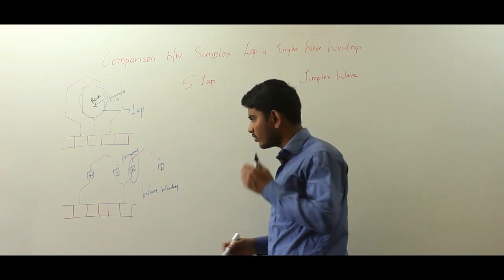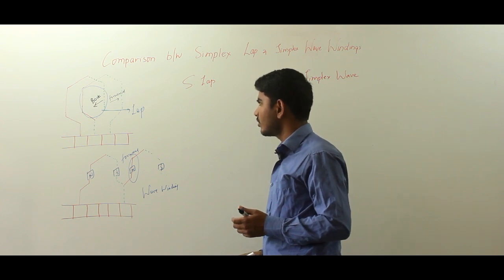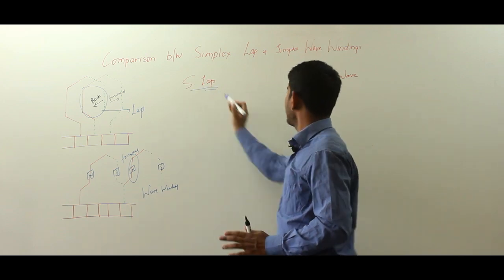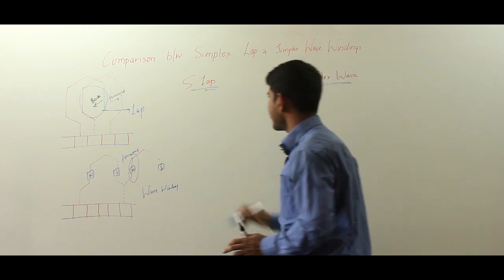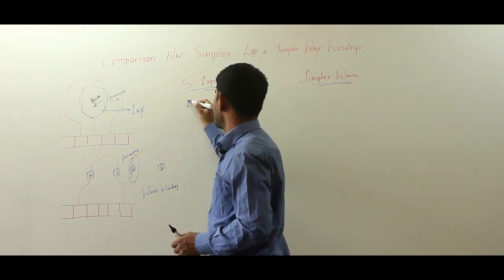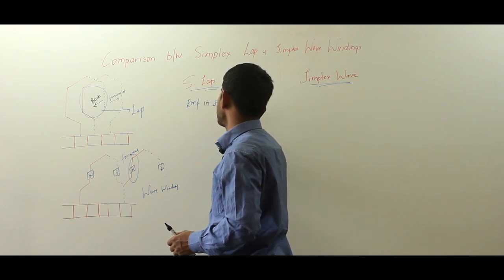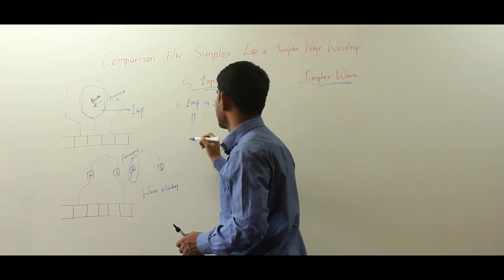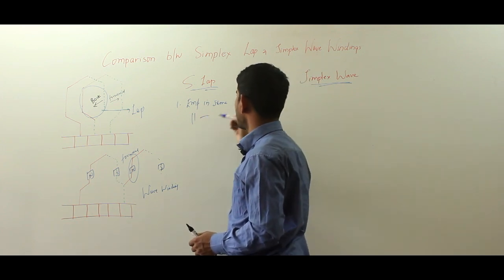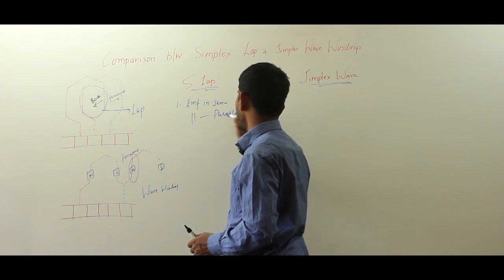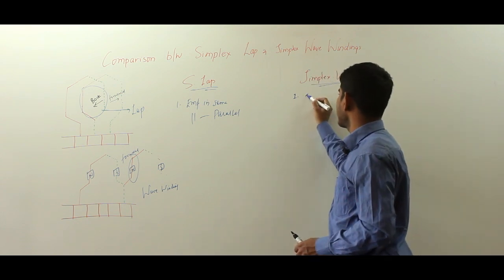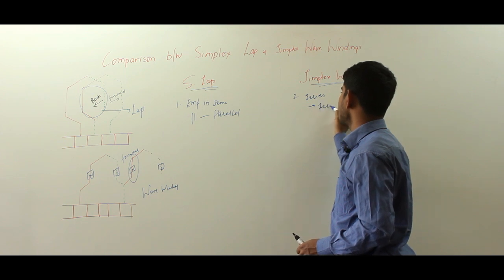In the wave winding video we talked about the advantages of wave winding and the lap winding features. In this video we shall see the overall basic differences between simplex lap winding and simplex wave winding. In simplex lap winding, the coils generating EMF in the same direction are connected in parallel — this winding is also called parallel winding. Here, the coils carrying current in the same direction are connected in series and it is also called series winding.